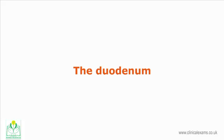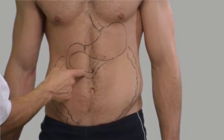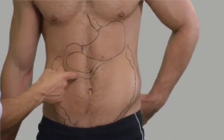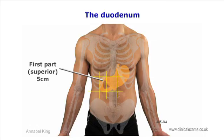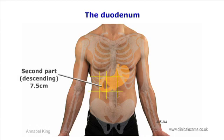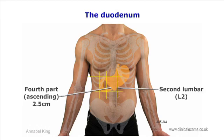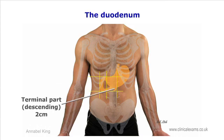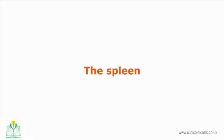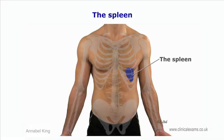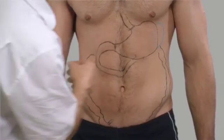After the pyloric sphincter, the duodenum continues to the right, projecting slightly upwards for about five centimeters, then curves downwards for about 7.5 centimeters, before curving to the left and slightly superiorly for around ten centimeters. Finally, it flexes downwards for another 2.5 centimeters at the level of L2, about two centimeters to the left, to become the jejunum.